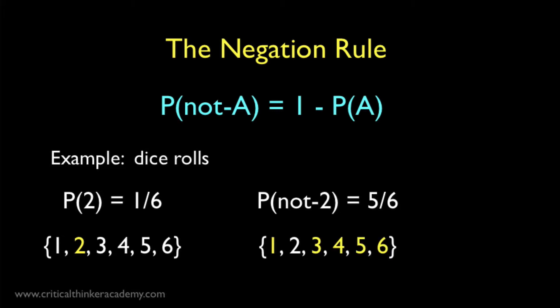Now what's the probability of not rolling a 2? Well this is just the probability of rolling a 1, or a 3, or a 4, or a 5, or a 6. Anything that's not a 2. This includes 5 of the six possible outcomes. So the probability is 5 in 6.